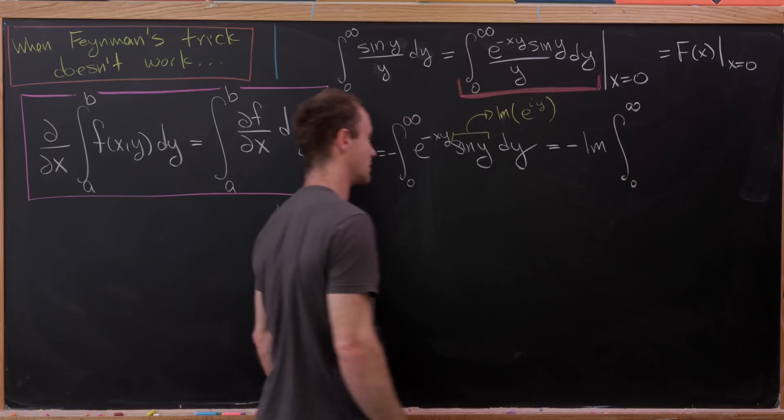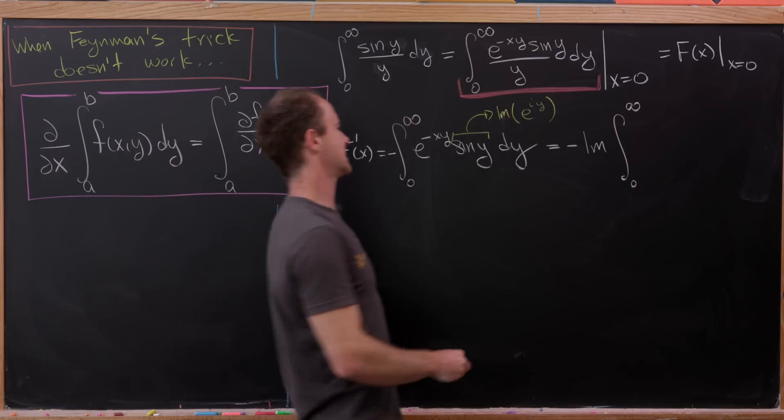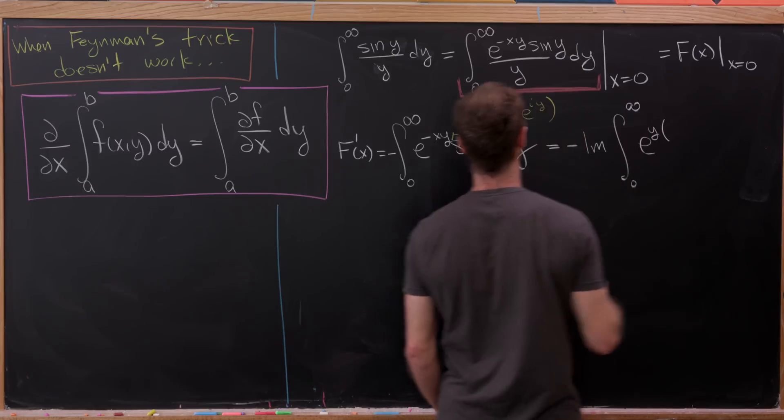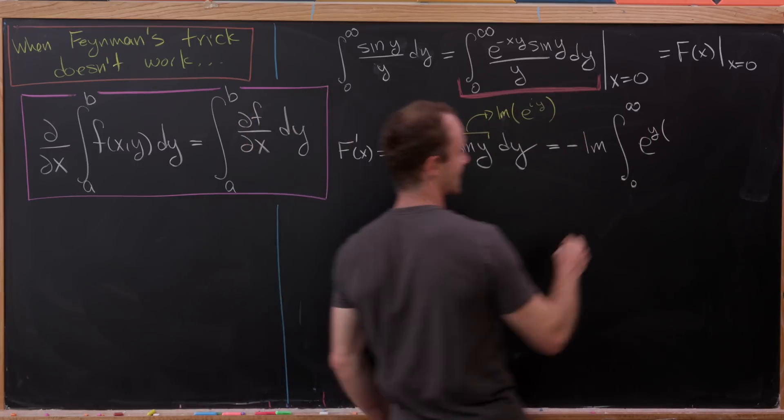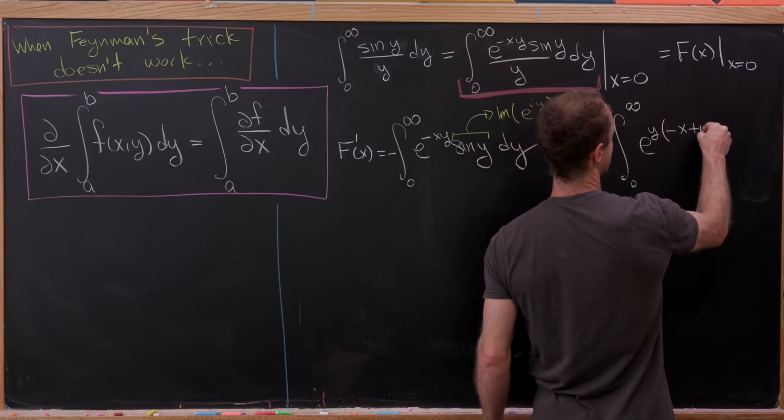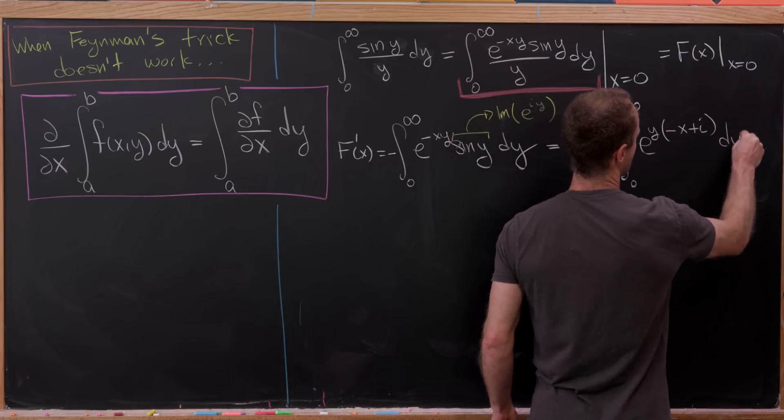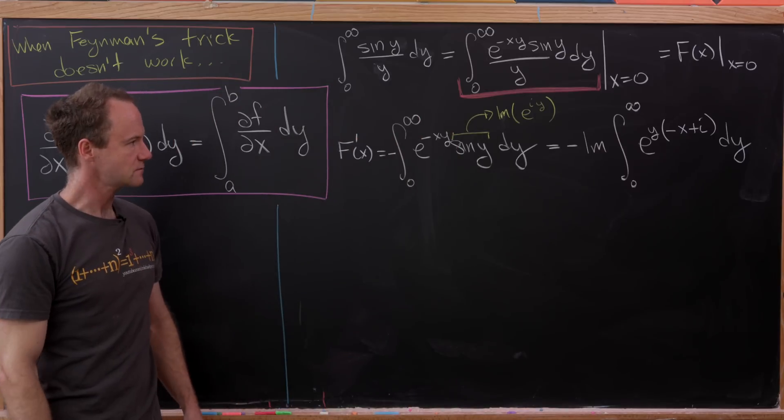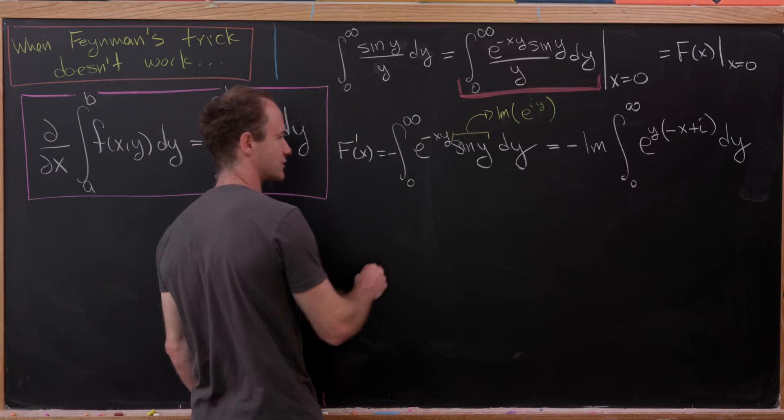It'll be e to the y times minus x plus i, and this is an integral with respect to y. But now we can take the antiderivative of that.